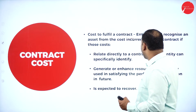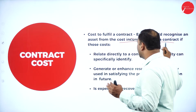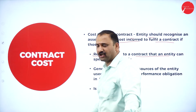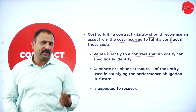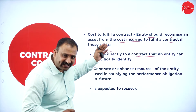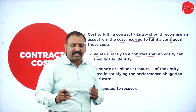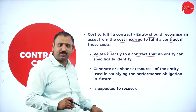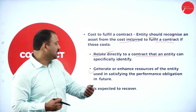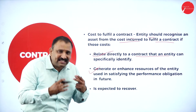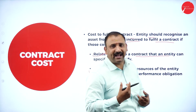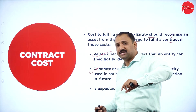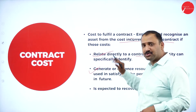The cost to fulfill a contract - an entity should recognize an asset from the cost incurred if the contract costs: first, relate directly to the contract and are specifically identified - for example, telecom, finance, or healthcare consulting; second, generate or enhance resources used by the entity in satisfying performance obligations in the future, enabling more contracts; third, are expected to be recovered after providing the consulting services.